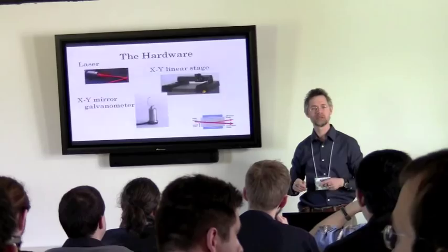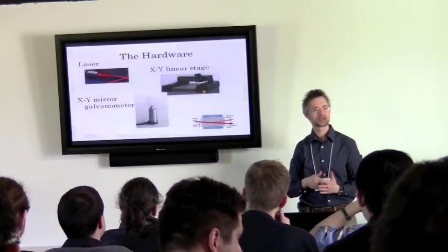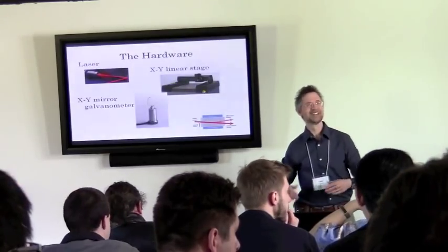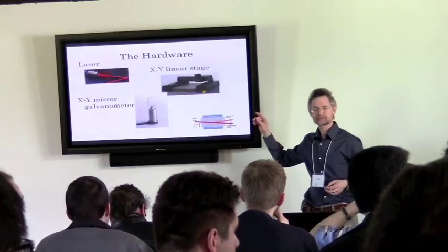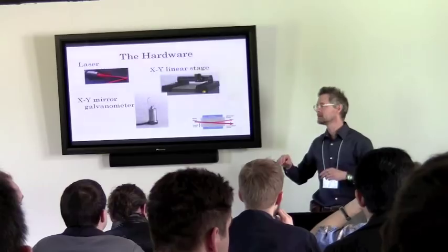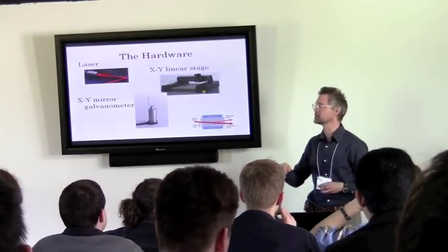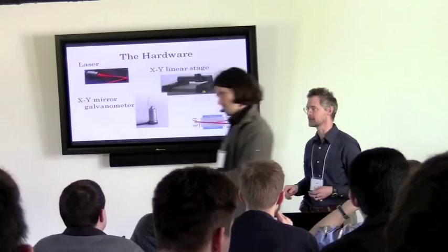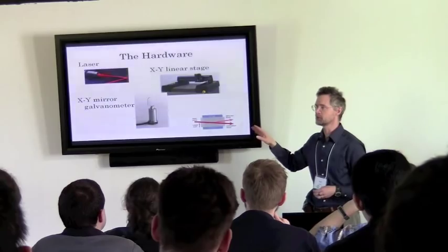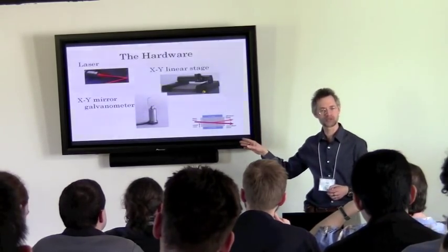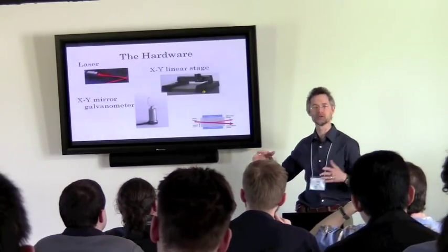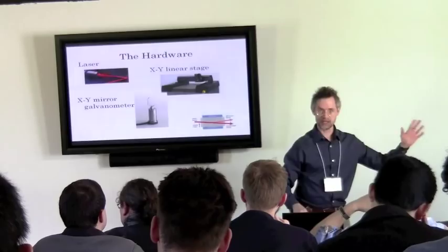The galvanometers are not quite linear because they work angularly. For small angles you can approximate linearly, and we try not to have large deflections in the mirror. But you still have to have some kind of calibration to convert to linear data.